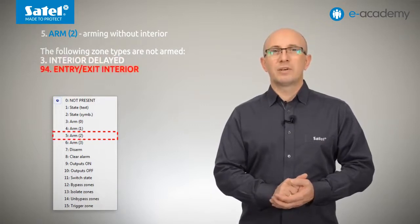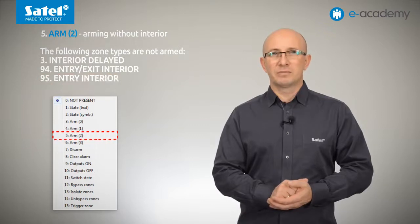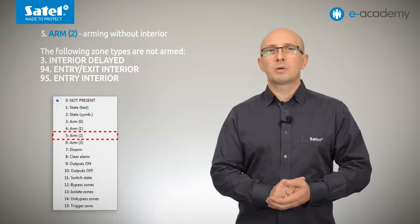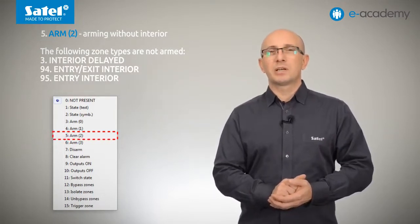94 entry exit interior, and 95 entry interior. This situation can be used in case when after arming, someone has to be able to move around the premises within the range of detectors programmed as interior.